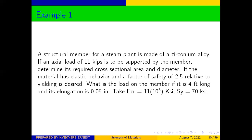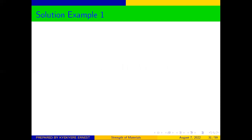A structural member for a steam plant is made of a zirconium alloy. If an axial load of 11 kips is to be supported by the member, determine its required cross-sectional area and diameter if the material has elastic behavior and a factor of safety of 2.5 relative to yielding is desired. What is the load on the member if it is four feet long and its elongation is 0.05 inches? We have been given the modulus of elasticity and the yield strength of the material.